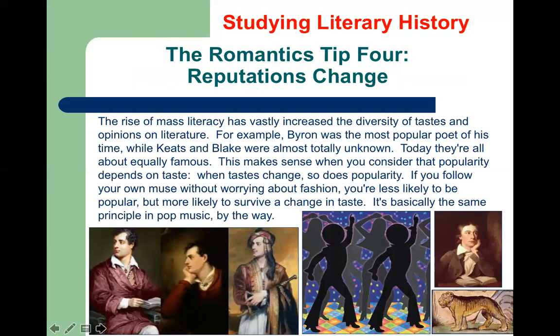Another thing for studying literary history: reputations change. It's not always the same figures throughout history who dominate, especially in our era of mass literacy. Byron is a great example because Byron was so famous — he completely dominated all the poetry of his time. But today he's about equally famous with Keats and Blake. To be famous, you've got to be in tune with the fashions, and fashions change. Sometimes if you're not so fashionable but you're sticking with your own muse, you can outlive fashion — that happens in poetry and in pop music.